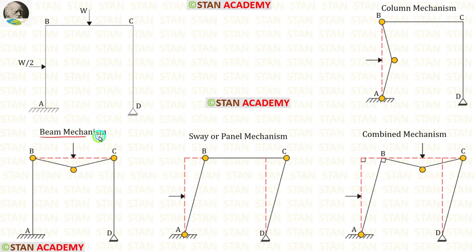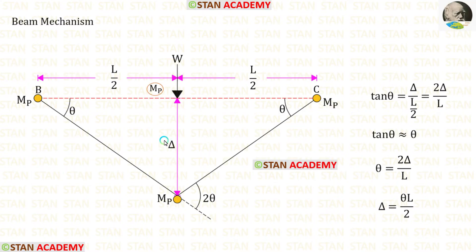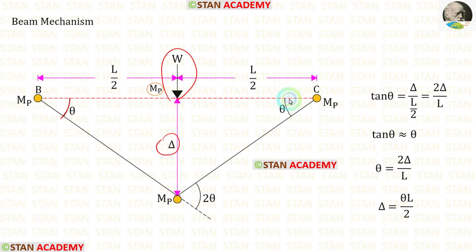Now let us see the beam mechanism. In this mechanism, at joints B and C we will have plastic hinges. The third plastic hinge will occur under the point load. Let us keep the displacement as δ. In this beam the point load acts in the center, so the angles at points B and C will be the same. Let us keep the angles as θ.